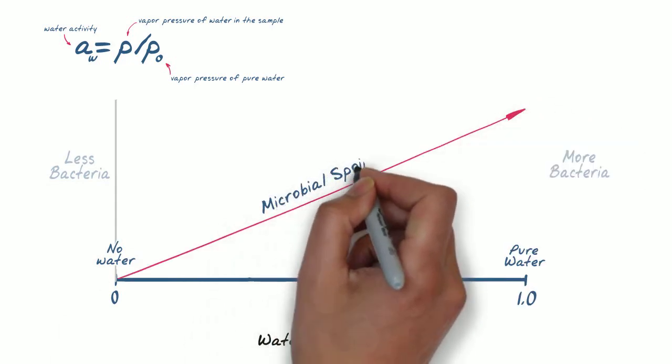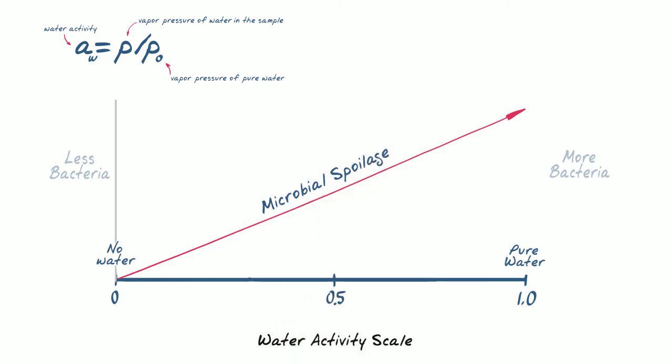Unbound water will exert vapor pressure which can be used to determine microbial spoilage, chemical, and physical stability.